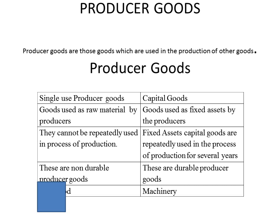Capital goods are those goods used as fixed assets by the producers. Fixed asset capital goods are repeatedly used in the process of production for several years. These are durable producer goods, like machinery.